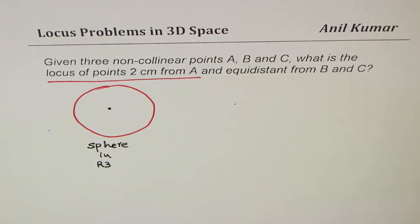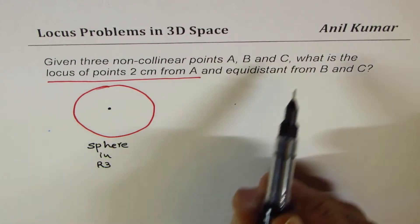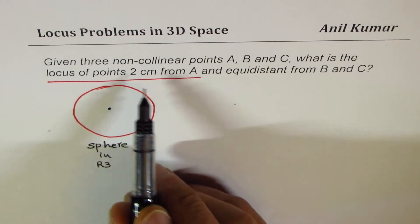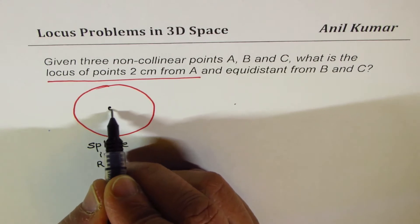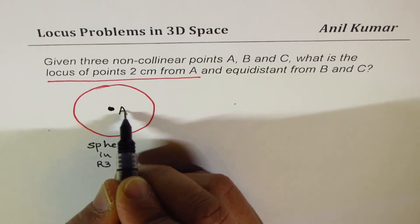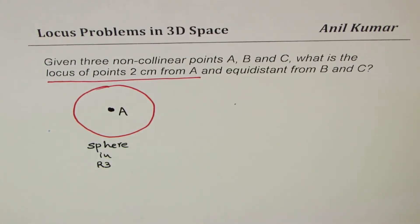It looks like a circle, but it is a sphere in R3, right? That is what we get in R3. Set of points which are 2 cm away from, let's say this is A, right? So, let me write this as A.